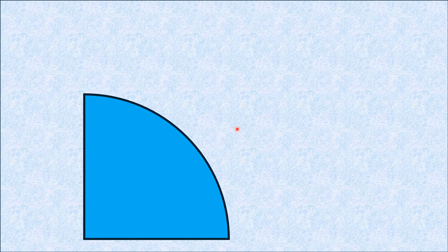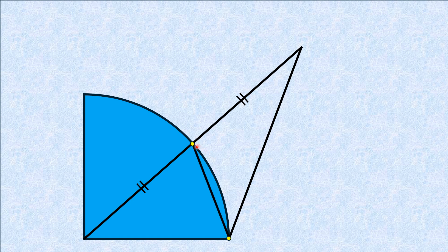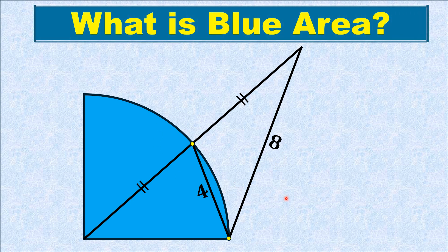Hello everyone. In this video, given is a quarter circle. A radial line is drawn, and this line is extended in such a way that this length and this length are equal. A line from this corner to this end of the line segment is drawn, and moreover another line is drawn from this point to this point. If the length of this line segment is 4 units and this line segment is 8 units, then by this limited data we have to find the area of this blue shaded quarter circle.